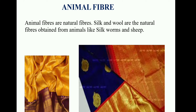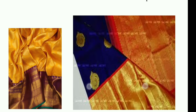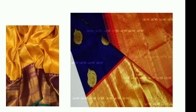Now coming to animal fiber. Animal fibers are natural fibers. Silk and wool are the natural fibers obtained from animals like silkworms and sheep. You might have seen your mom wearing beautiful, soft and shiny saris on special occasions. The texture, beauty, and luster of this fabric grabs a lot of attention — and this fabric is silk. Today we are going to learn about one natural fiber, that is silk, and how silk is produced.